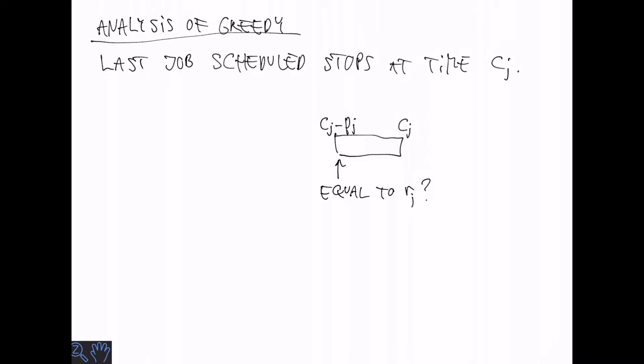Maybe this is equal to rj. But in general it could be that there was some other job that was running at time rj. In that case this other job, let's say you call it j prime,